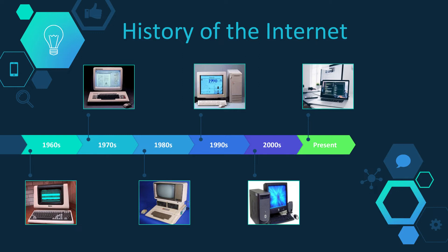The internet celebrated its official birthday on January 1, 1983. Prior to this, there was no standard way for computer networks to communicate with one another. Transfer Control Protocol/Internet Protocol, or TCP/IP, was created as a new communication protocol, enabling various types of computers on different networks to talk to one another.